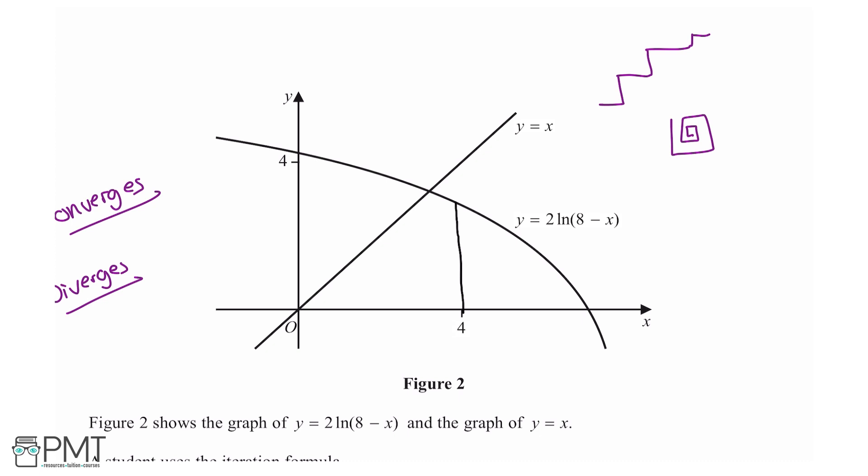The next thing we do is draw a horizontal line from y equals 2ln(8 - x) to y equals x. Then from y equals 2ln(8 - x) we draw a vertical line to y equals x, then a horizontal line from y equals 2ln(8 - x) to y equals x again. This process just keeps repeating. Let's do a few just to be a hundred percent sure—yep, it converges to where we need it to. As we can see from the curve, it does get closer and closer to a point, so we know that it converges.